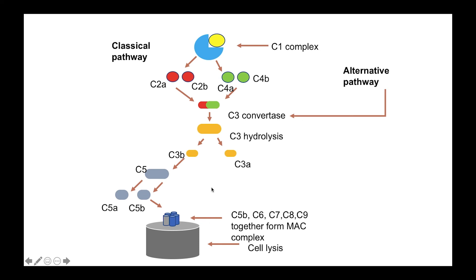By now we have learned that three pathways can activate the complement system. Let us learn how the classical pathway actually works. The classical pathway is activated when C1Q binds to the antibody and antigen complex. C1Q is also a complement protein and binding of C1Q initiates a cascade of events which ultimately leads to the formation of C3 convertase, which will ultimately lead to the formation of the terminal complex — that is the MAC complex.